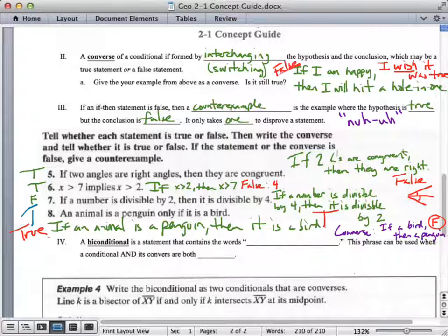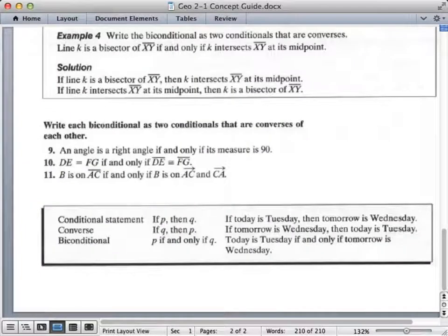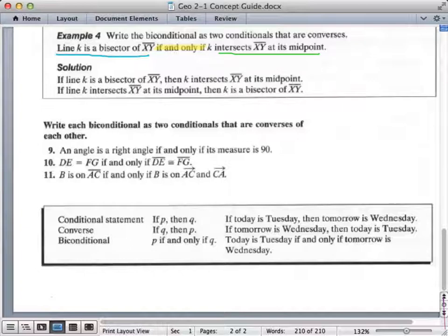All right, the last term, we've had a hypothesis, conclusion, converse, counterexample. Now, biconditional is the last one, and it contains the words if and only if. This phrase is used when both a conditional and its converse are both true. It's hard to come up with these yourself, but check out this example here. It says, line k is a bisector of segment xy if and only if k intersects segment xy at its midpoint. Is that true both ways? Well, let's see. There's the if and only if. That is how you write a biconditional with the phrase in the middle. What this means is, if we write it as one way, line k is a bisector if line k is a bisector of segment xy, then k intersects segment xy at its midpoint. That is true. If we flip that around, if line k intersects segment xy at its midpoint, then k is a bisector of segment xy. That's also true, which is why this is a biconditional. It is true both ways.